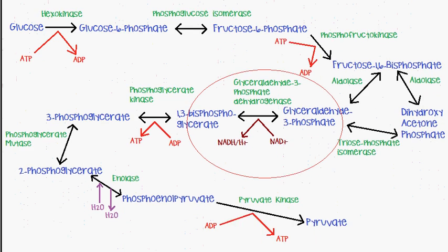This reaction step shown here is aerobic glycolysis, but I want to focus on this specific reaction where glyceraldehyde 3-phosphate is converted into 1,3-bisphosphoglycerate. As you can see, NAD+ is used to form NADH, and this is catalysed by glyceraldehyde 3-phosphate dehydrogenase.